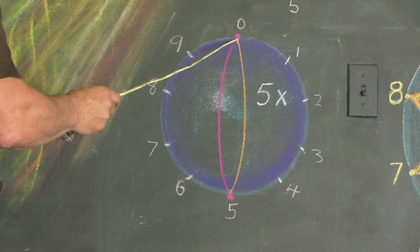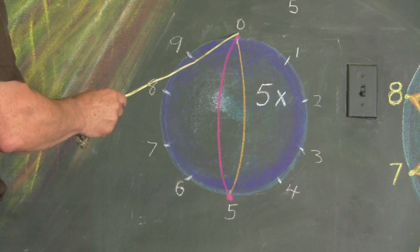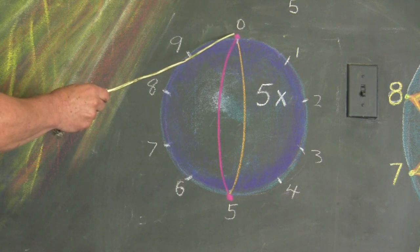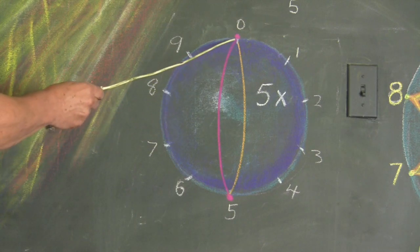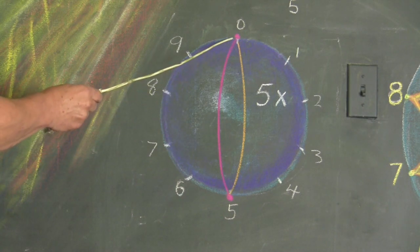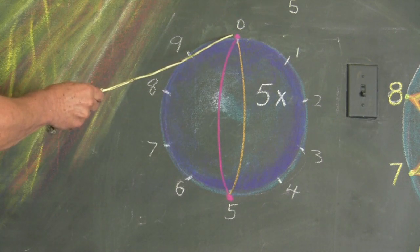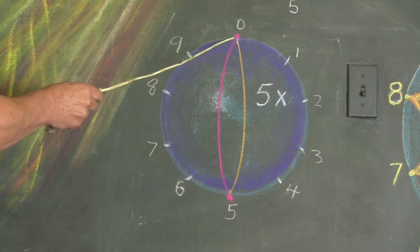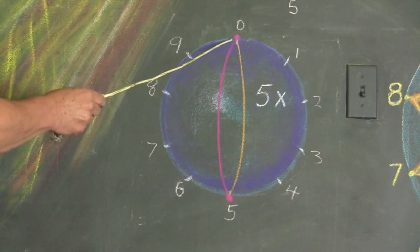Now this circle will show us the five times tables. A little different than the others because five times always ends in zero or five. So just like a calculator, we're going back and forth: zero times five is zero, one times five is five, two times five is ten, three times five is fifteen, four times five is twenty, five times five is twenty-five, six times five is thirty, seven times five is thirty-five, eight times five is forty, nine times five is forty-five, and ten times five is fifty.